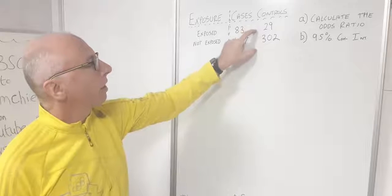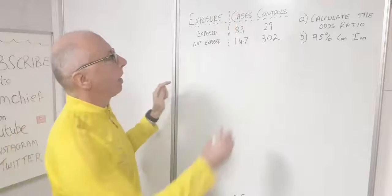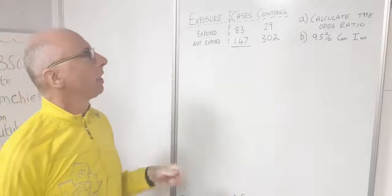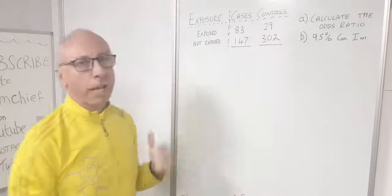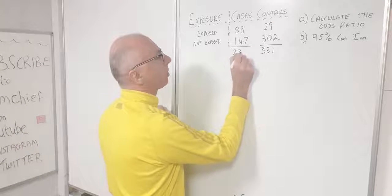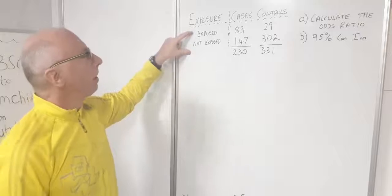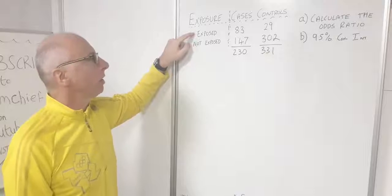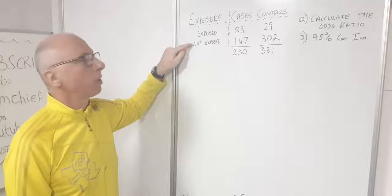We have a contingency table with the outcomes of a survey that was carried out. The people in this column had bad symptoms from the burning at the chemical factory, and these people here didn't have bad symptoms. Along the rows, we have those who were exposed to the chemicals released into the air from the burning, and those who were not exposed.